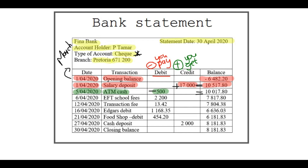On the 6th of April, there were school fees paid electronically via EFT, and the amount is 2,200, so he has even less in his bank account.